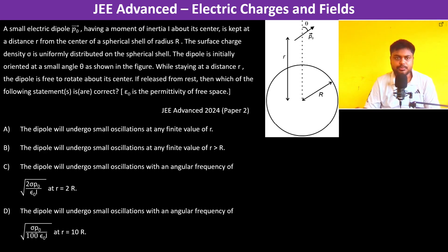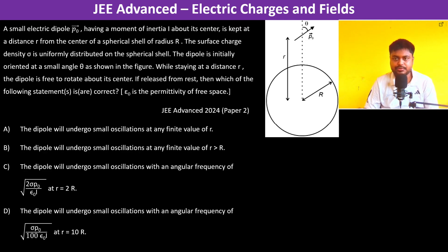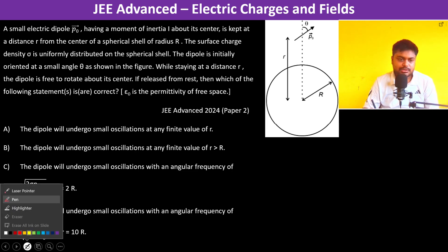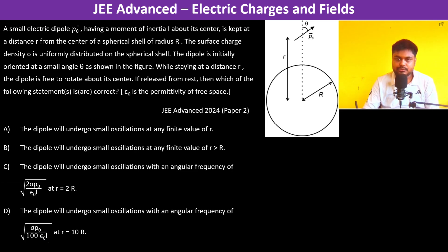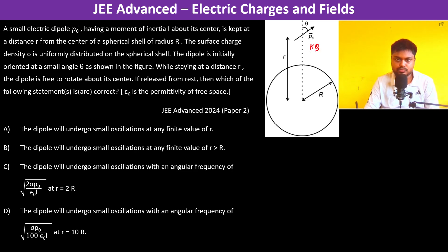A small electric dipole p₀ having a moment of inertia about its center is kept at a distance r from the center of a spherical shell of radius R. The electric field due to this sphere is going to be kq/r².